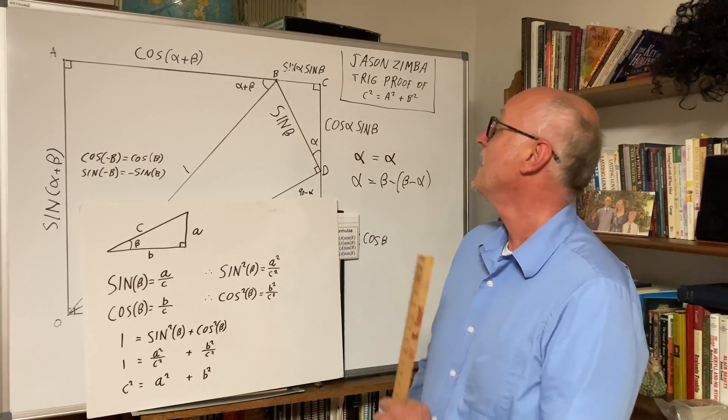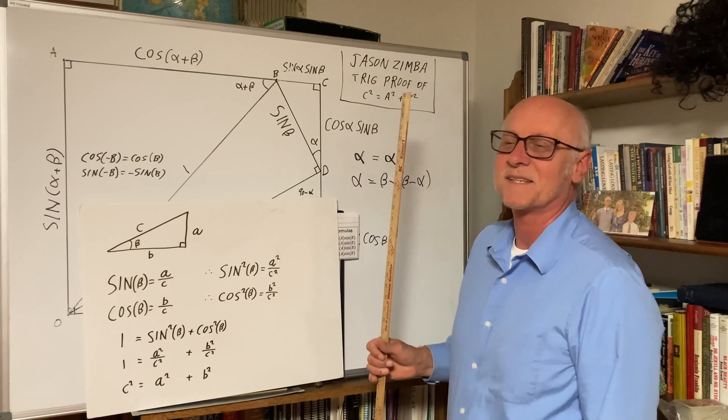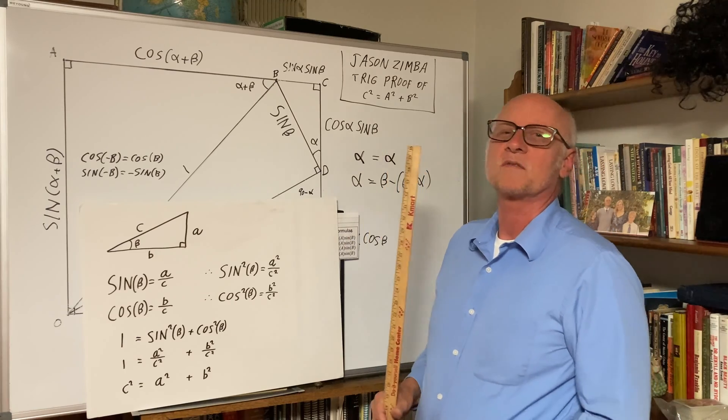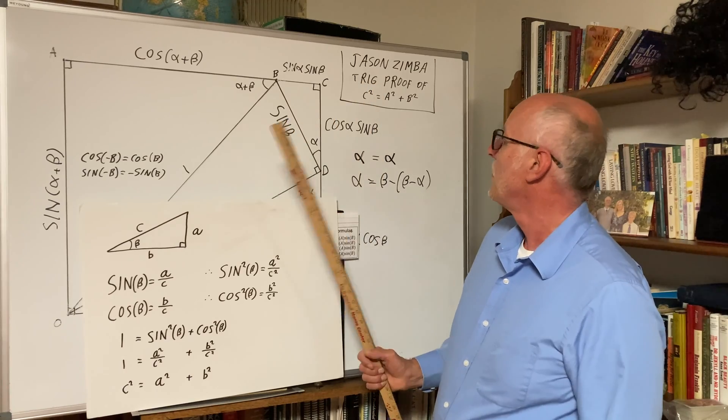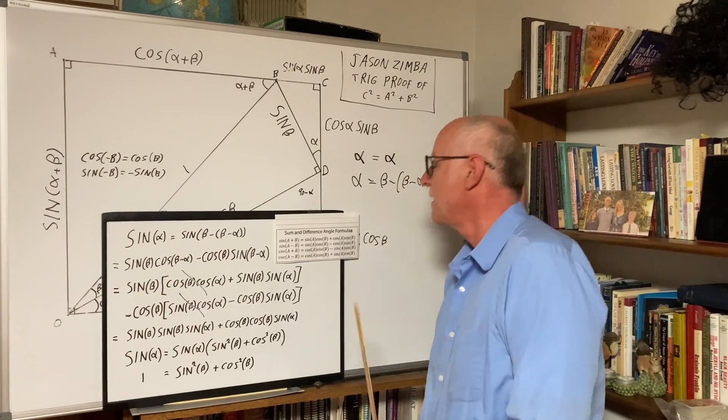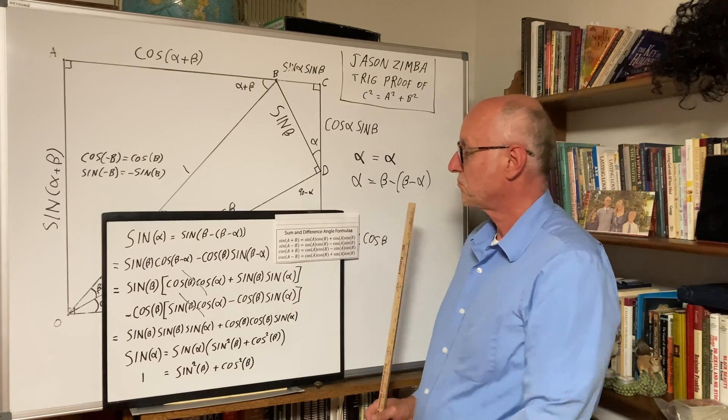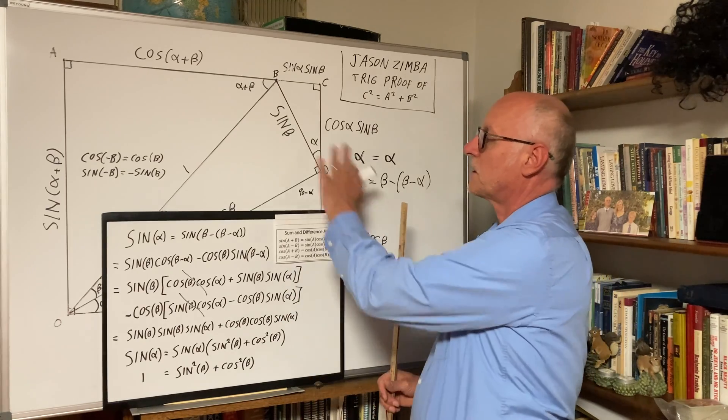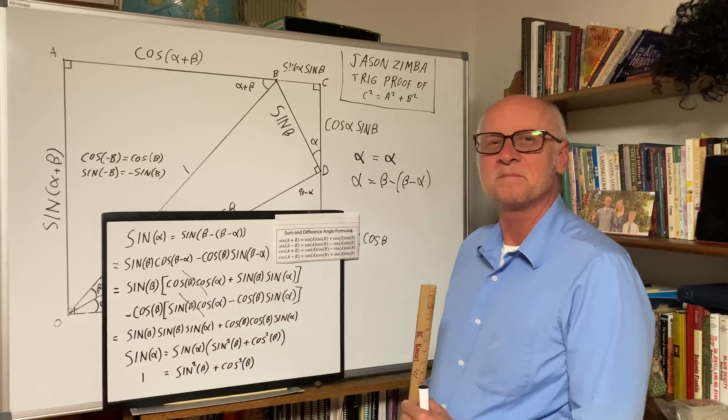And that's the famous Jason Zimba proof of the Pythagorean theorem. Very nice proof, it avoids any sort of circular reasoning, because in order to prove the sine and difference angle formulas, you don't need the Pythagorean theorem to do this, just simple trig, so we don't have circular reasoning, and that's a good thing. Thank you.